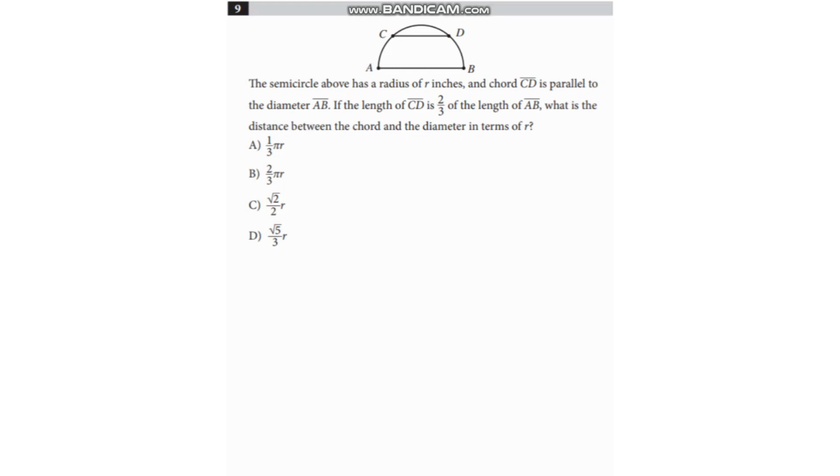The semicircle above has a radius of R inches and chord CD is parallel to the diameter AB. If the length of CD is two-thirds of the length of AB, what is the distance between the chord and the diameter in terms of R? First thing we have to do is make labels on this diagram. Let's label the center of the semicircle as O and the center of chord CD as E.